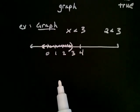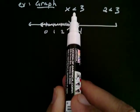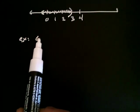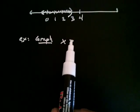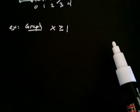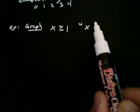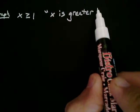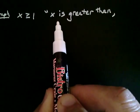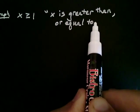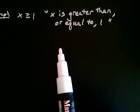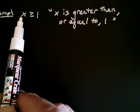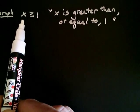Clearly, there are going to be situations when we do want to include the number, so we have a different inequality symbol to indicate that. Let's say we want to graph x is greater than or equal to one. x is greater than or equal to one — what's new is that x can be greater than one, as we saw before, but now also equal to one. So x can be greater than one, like two and three and four, but it can also be equal to one.